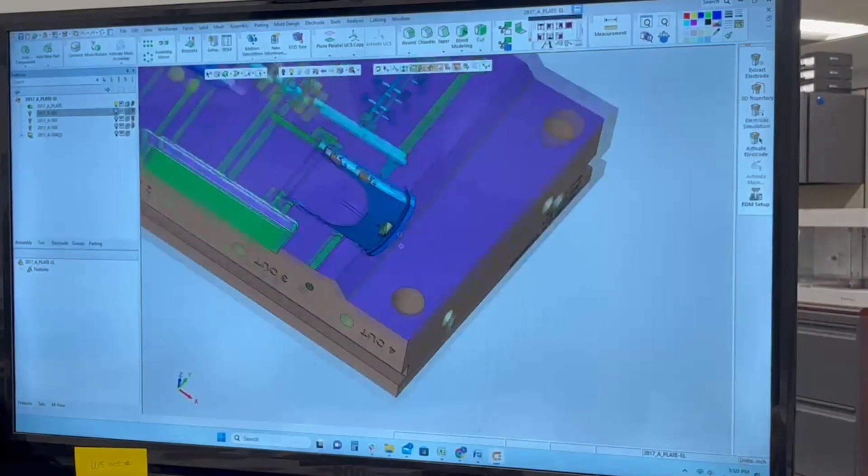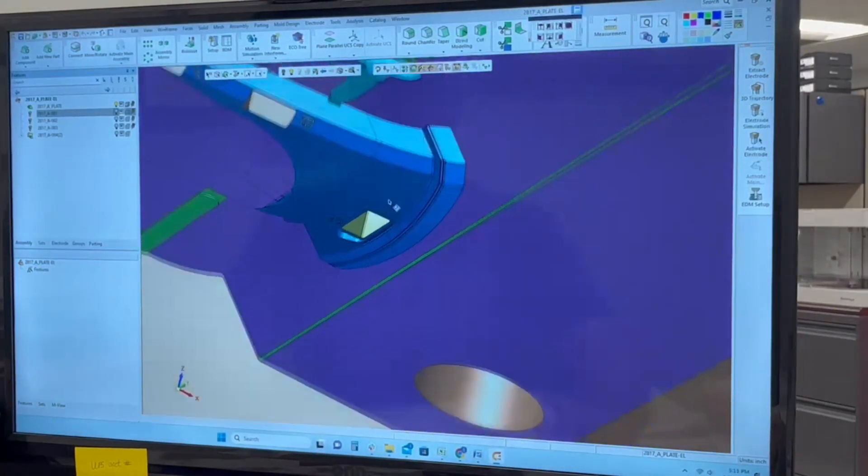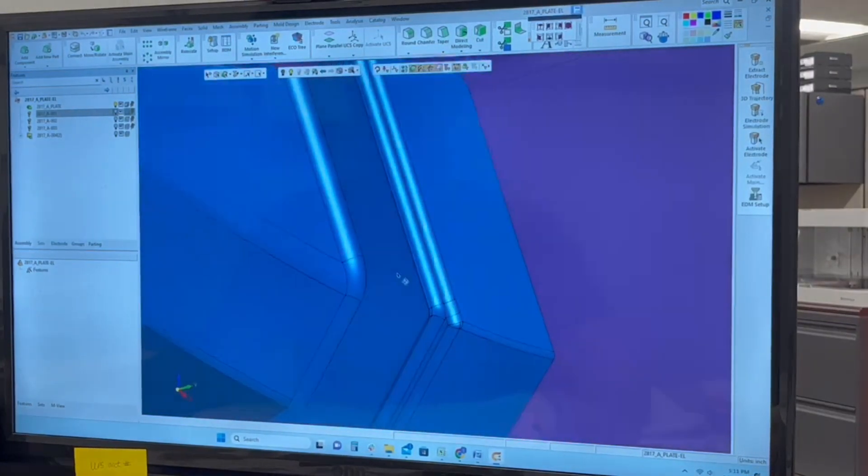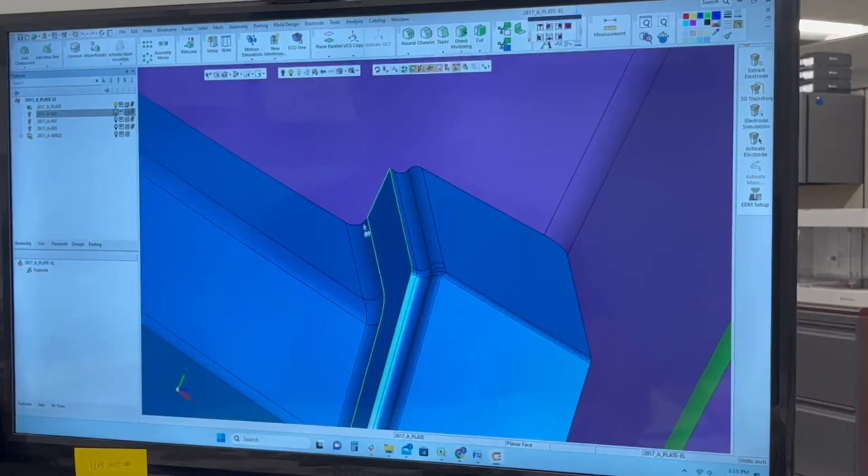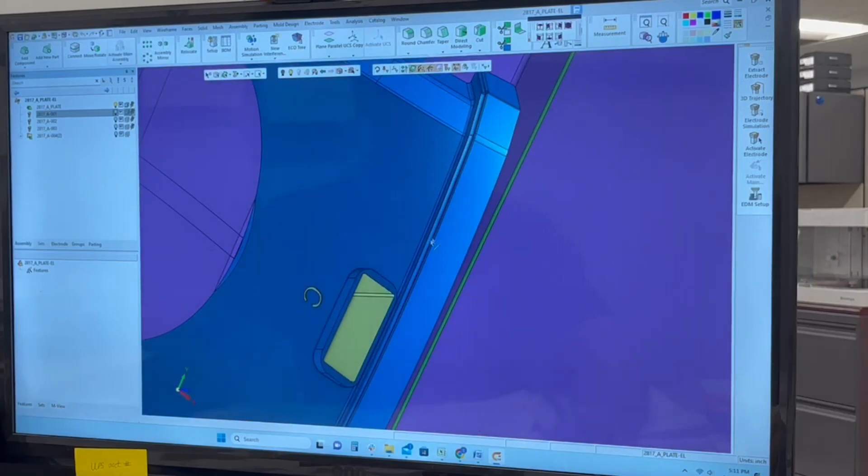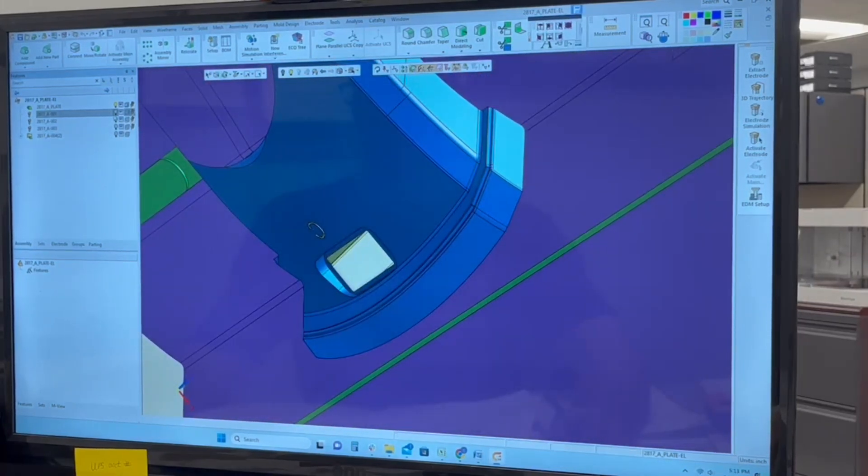Here we have the cavity side of this mold, and we were out there on the EDM trying to show you what it looked like, but the CAD shows it a lot easier. This is the shape we're working with. It's a radius radius into a sharp corner. So we ended up making an electrode for making this as sharp as we can. Pretty much is going to be like a 1,000 rad when it's done.